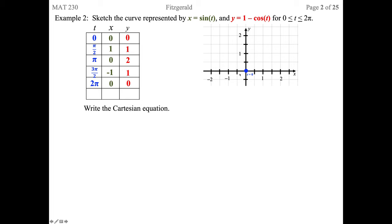Let's start plotting these points. When t is 0, we're at (0, 0). When t is π/2, we're at (1, 1) — notice the little t = π/2 label. At t equals π, we're at (0, 2). At 3π/2, we're at (-1, 1). And at 2π, we're back to (0, 0). This looks like a circle centered at (0, 1) with radius 1. Remember to put arrows in to represent the direction in which we're traveling.